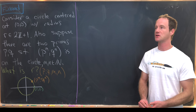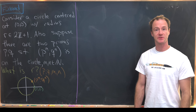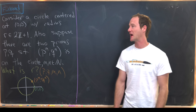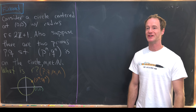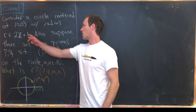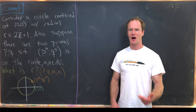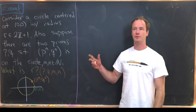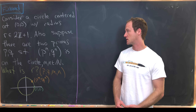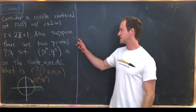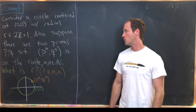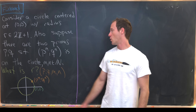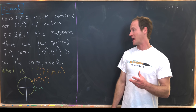Here we have a geometrically stated number theory problem from a Finnish math contest. We want to consider a circle centered at the origin — the point (0,0) in the xy-plane — with radius r which is an odd natural number, so r could be 1, 3, 5, 7, 9, and so on. We suppose there are two prime numbers p and q such that there are natural numbers m and n where (p^m, q^n) is a point on the circle.